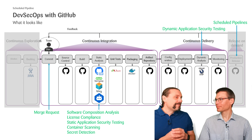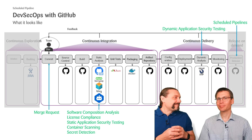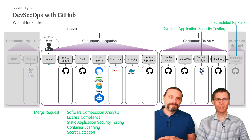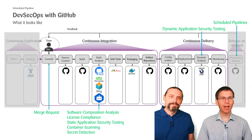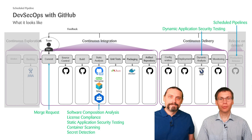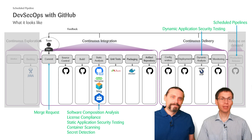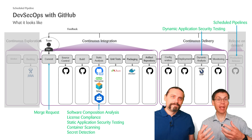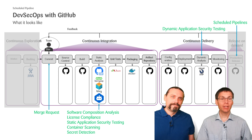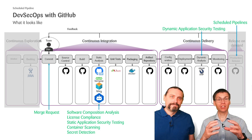In our past 11 videos we started with a general introduction over the whole pipeline and the platform. We then introduced software composition analysis, license compliance, static application security testing, container scanning, and secret detection. We went forward and did dynamic application security testing as well as merge requests and how they integrate into the platform and the security tools. Finally we did sessions about scheduled pipelines and vulnerability management with the features the platform provides.